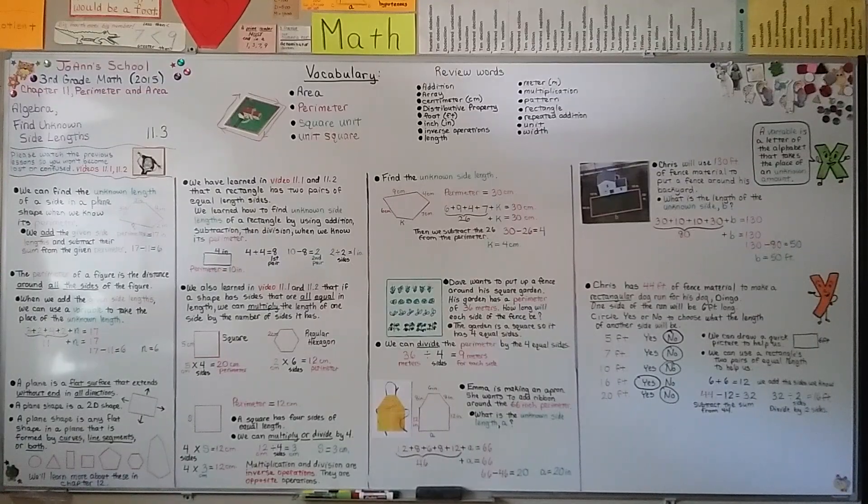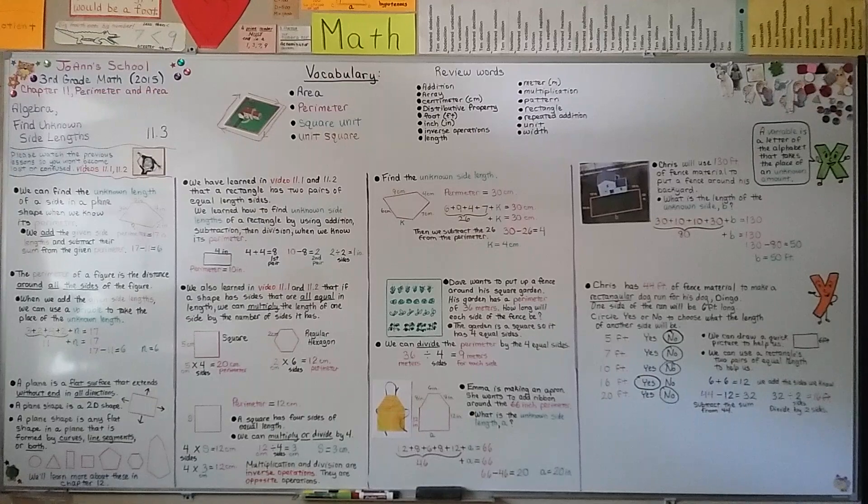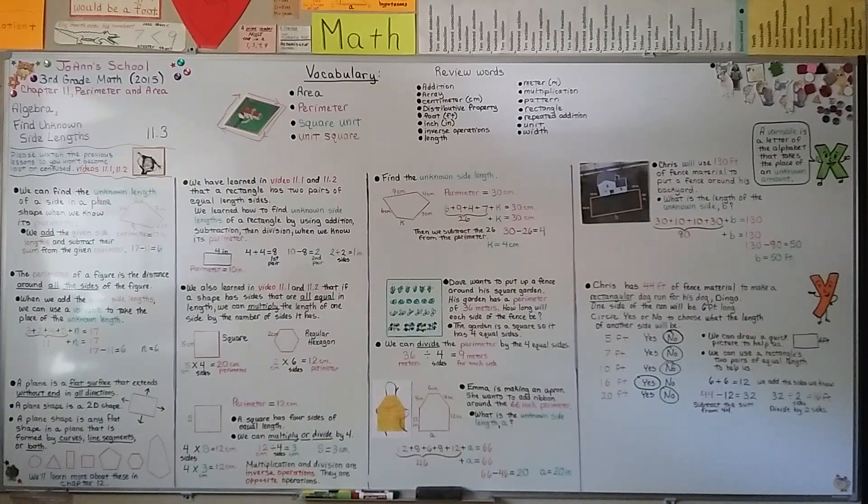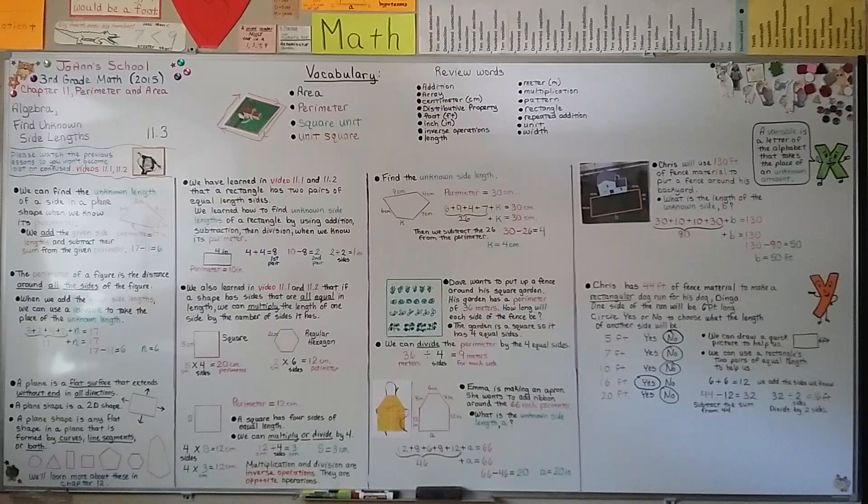So now you should understand how to find unknown side lengths and the perimeter of a figure or a plane shape. That's the outside measure of a figure going around the outside. We're going to talk about area next in 11.4. That's the inside space. I hope I'll see you there. Bye.